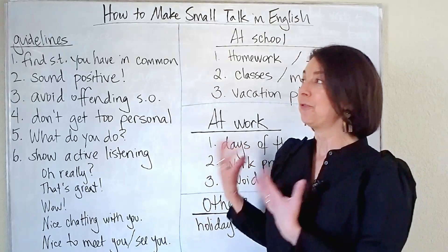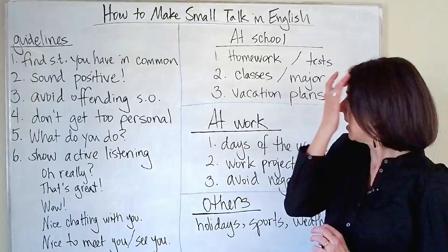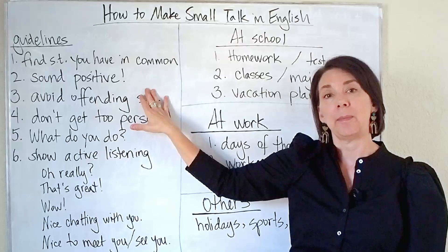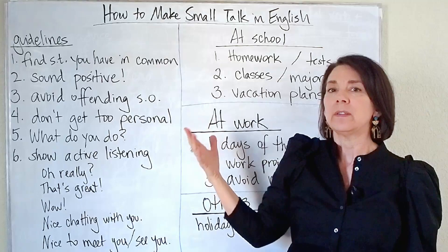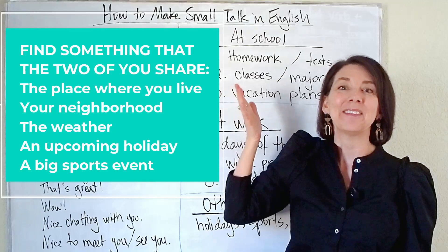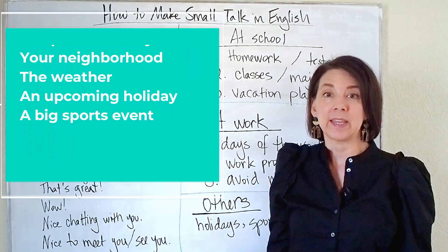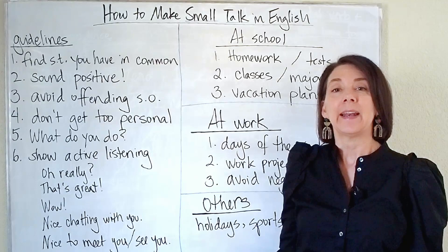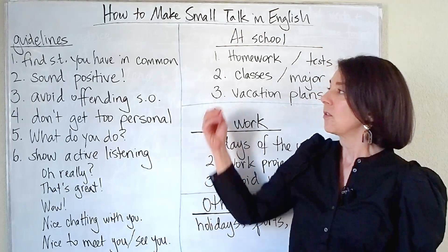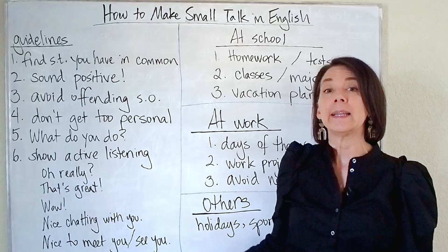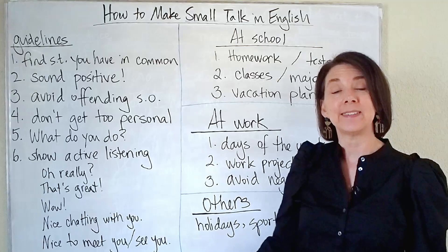Let's talk about some general guidelines for making small talk in English. First of all, you want to find something that you and the other person have in common. This could be the place where you live, your neighborhood, the weather, or a situation like a holiday that's coming up or a famous sporting event. For example, recently the Olympics were on TV and I made small talk with people about whether or not they were watching the Olympics. Find something you have in common — that's usually the easiest way to make small talk successful.